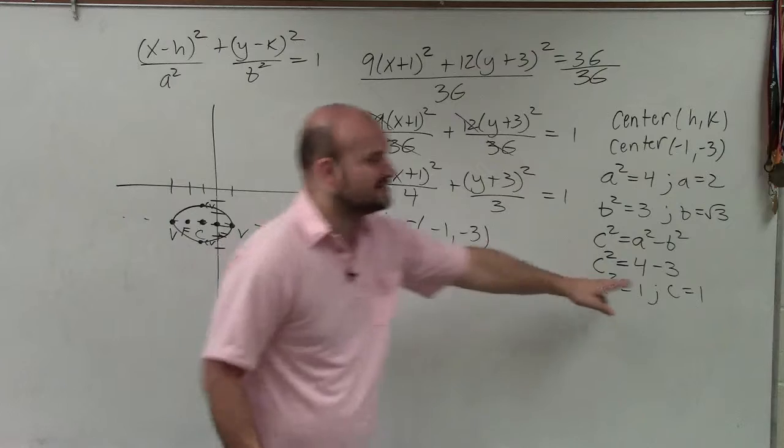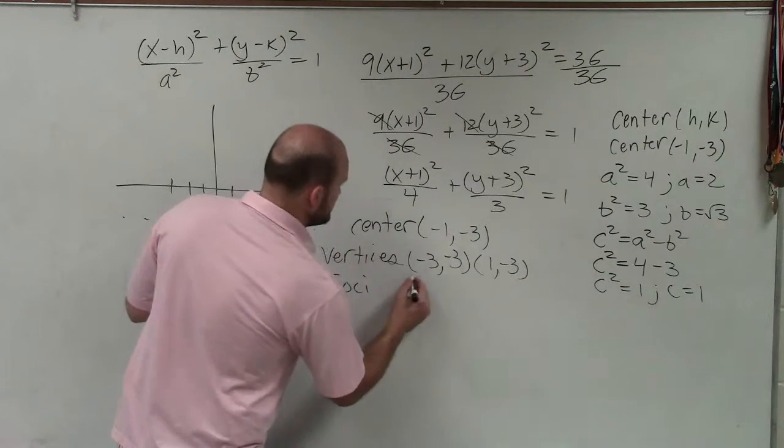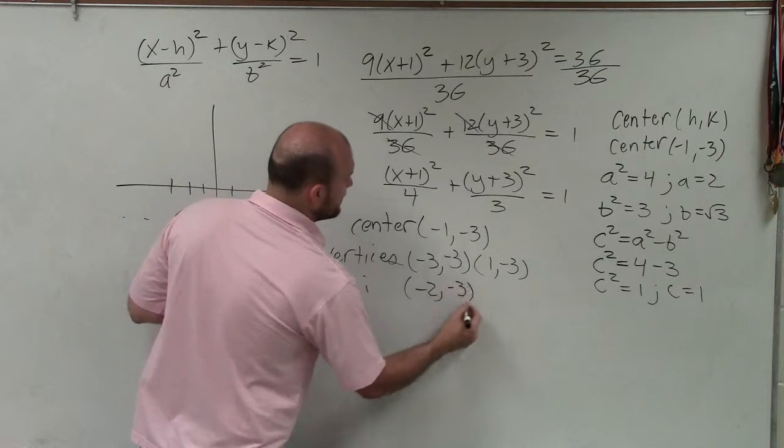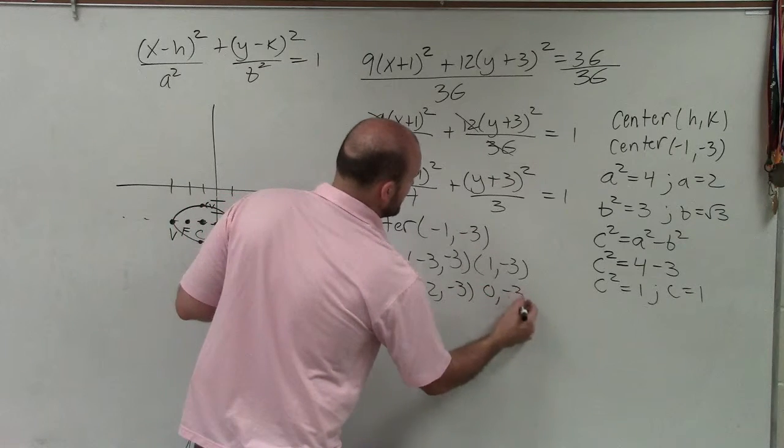The foci is the same thing. You're just going to be adding and subtracting the distance of c, which is 1. So the foci is just going to be subtracting 1 from -1, which would be (-2, -3), and then adding 1, which is (0, -3).